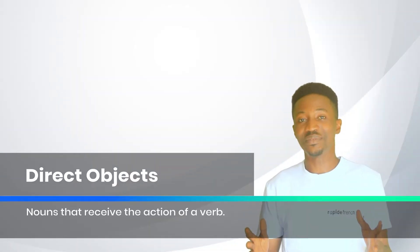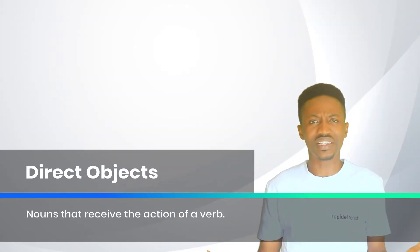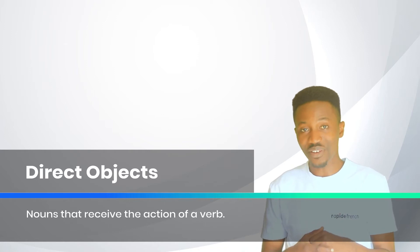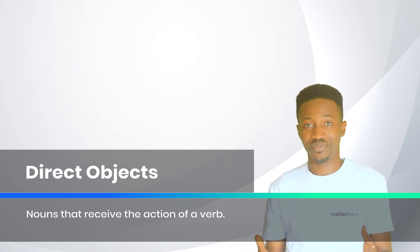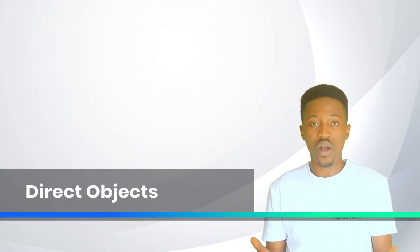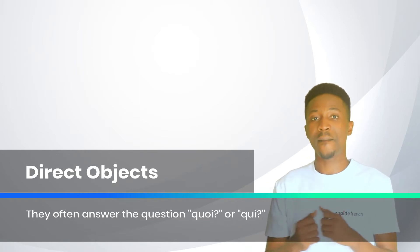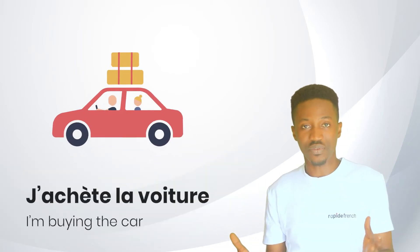What are direct objects? In French, and I believe in other languages, direct objects are nouns that receive the action of a verb. In French, they often answer the question quoi or qui. For example: I am buying the car — j'achète la voiture.